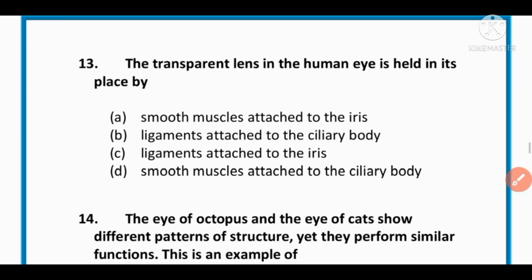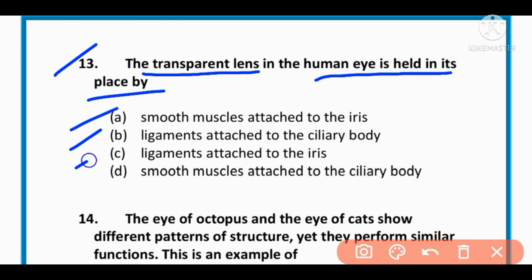MCQ number 13: The transparent lens in human eye is held in its place by: smooth muscles attached to iris, ligaments attached to the ciliary body, ligaments attached to the iris, or smooth muscles attached to the ciliary body.